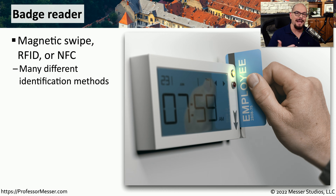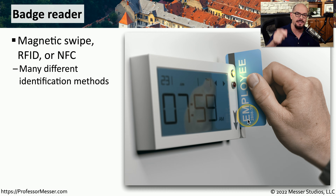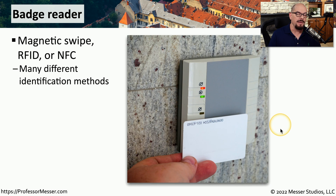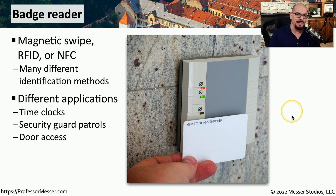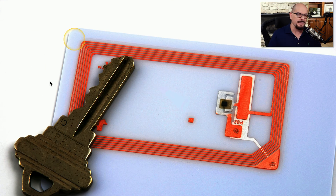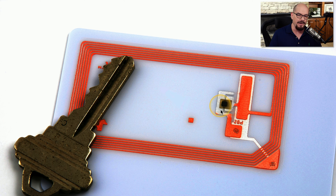If you work in an office building, you probably gain access using a badge reader. This can be a magnetic badge reader that you scan through a reader on the wall, or it might be a proximity reader that allows you to use a badge with an RFID or NFC tag inside of it. Although it's common to use these badge readers for access to a particular room or area of a building, you could also use them for time clocks or to mark that a security guard has patrolled at a particular time. Here's what's inside one of those proximity cards — there's an antenna around the outside that receives and sends the signal back to the proximity reader, and in the very middle is the RFID chip that identifies your card and allows you access.